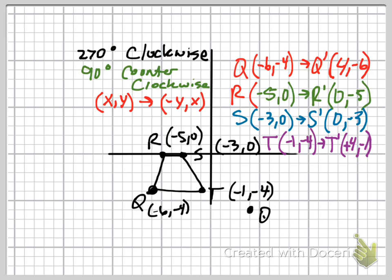Let's plot all of our new points. q is at 4, negative 6. r is at 0, negative 5. s is at 0, negative 3. And t is at 4, negative 1. And there's my new shape. The shape and size didn't change. All it did was turn or rotate 90 degrees counterclockwise.